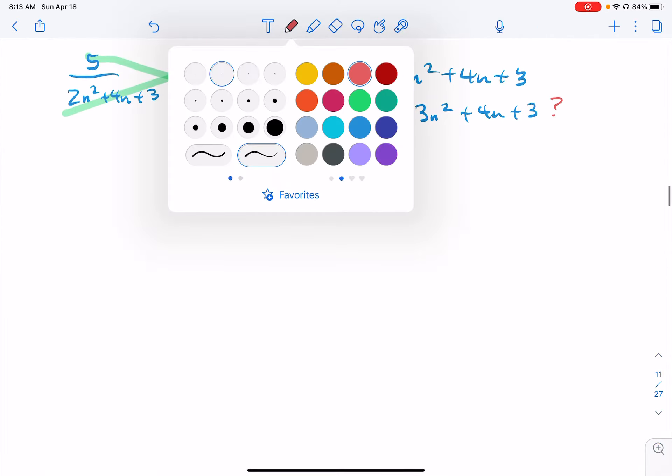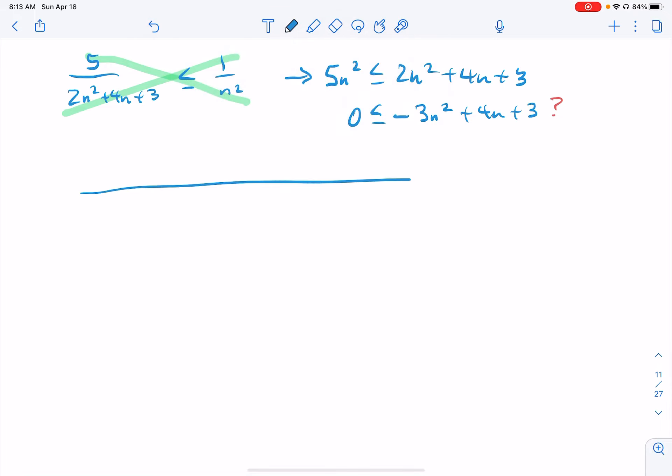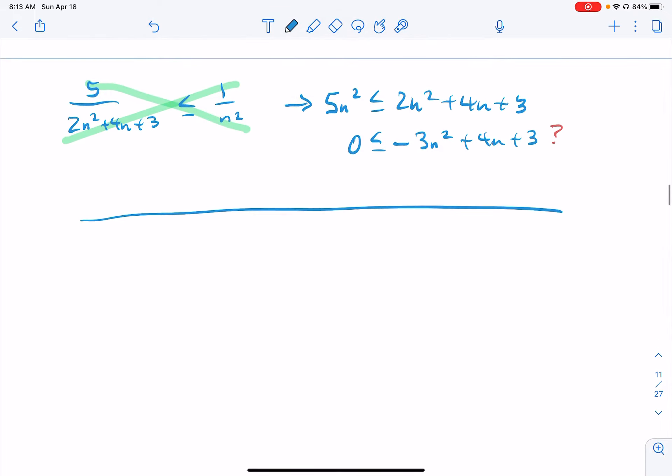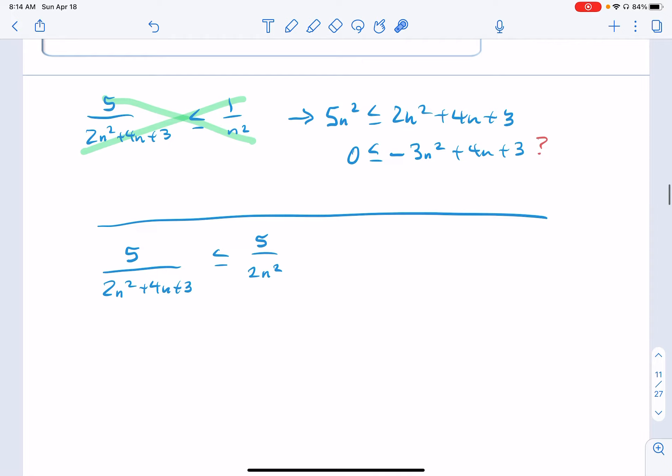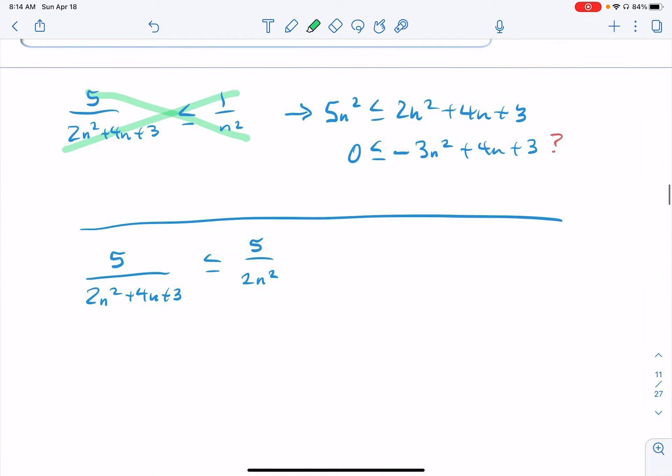Alright. So we still need to be smaller than a convergent. So 5 over 2n² + 4n + 3 is less than or equal to 5 over 2n². Now I can pretty much conclude this one because the denominator here is a little bit bigger than the denominator here, so this is going to be overall a smaller number. But maybe I don't notice that, I'm taking the test and I'm sweating through it. Go ahead and cross multiply here.